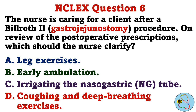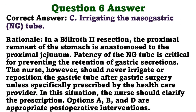Question 6. The nurse is caring for a client after a Billroth 2 procedure. On review of the postoperative prescriptions, which should the nurse clarify? A. Leg exercises. B. Early ambulation. C. Irrigating the nasogastric tube. D. Coughing and deep breathing exercises. The correct answer is C, irrigating the nasogastric tube. Rationale: In a Billroth 2 resection, the proximal remnant of the stomach is anastomosed to the proximal jejunum. Patency of the NG tube is critical for preventing the retention of gastric secretions. However, the nurse should never irrigate or reposition the gastric tube after gastric surgery unless specifically prescribed by the healthcare provider. The nurse should clarify the prescription. Options A, B, and D are appropriate postoperative interventions.